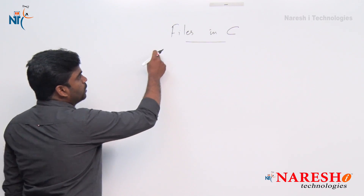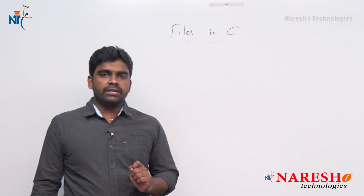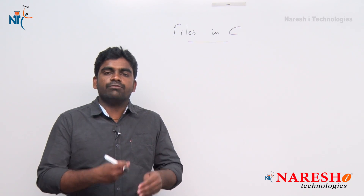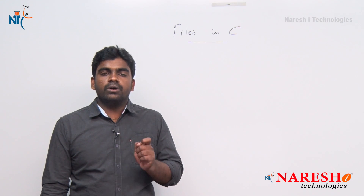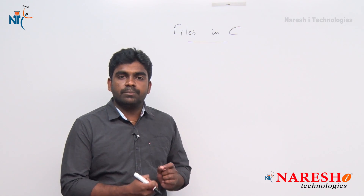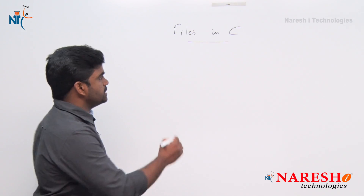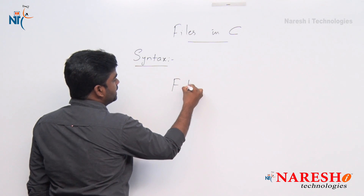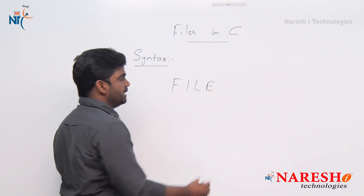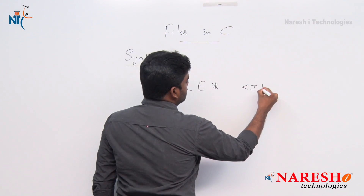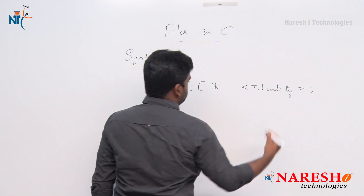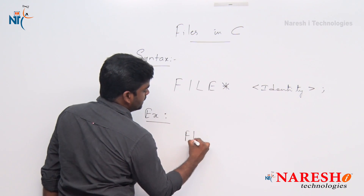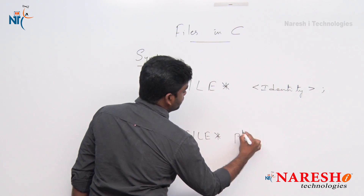First of all, if you want to work with a file, just like you use an integer pointer to work with integer data or a float pointer for float data, in the same way if you want to work with any file, you need a file pointer. The syntax uses a predefined data type FILE (all capital letters), followed by a pointer variable name — for example, PTR.